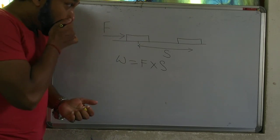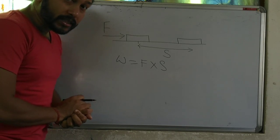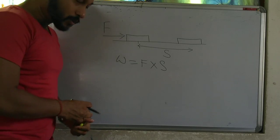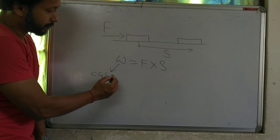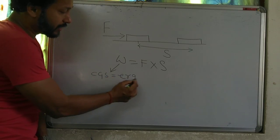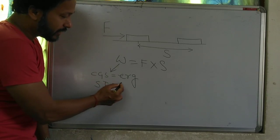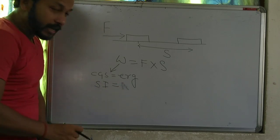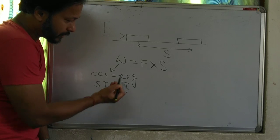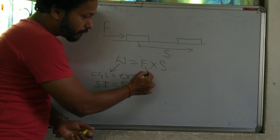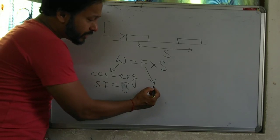Now we shall discuss about the unit of work. The CGS unit of work is erg. The SI unit of work is Joule. F is force — the CGS unit of force is dyne and the SI unit is Newton.